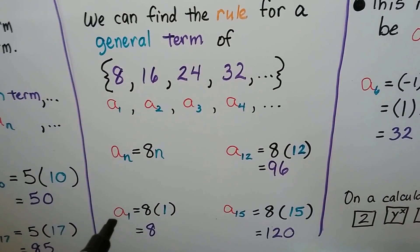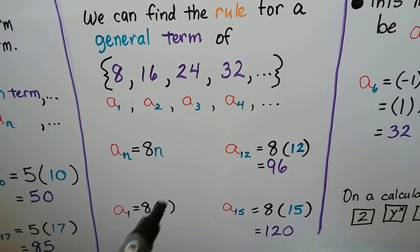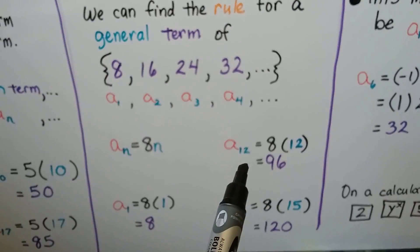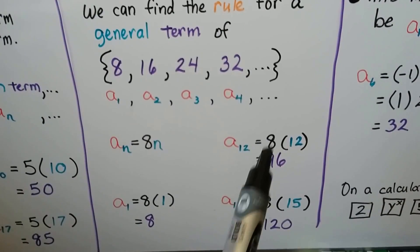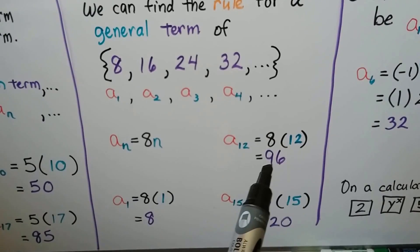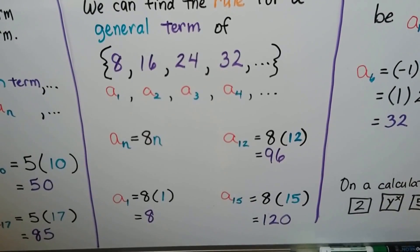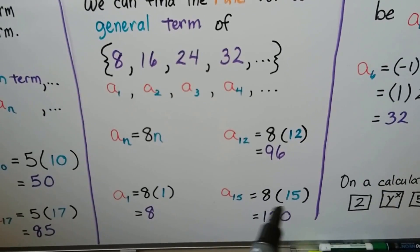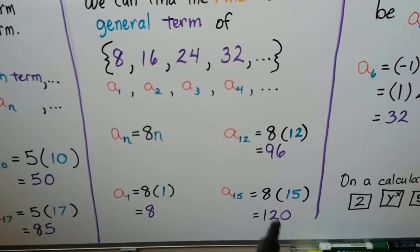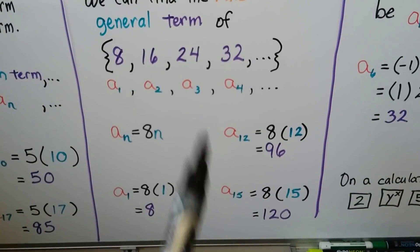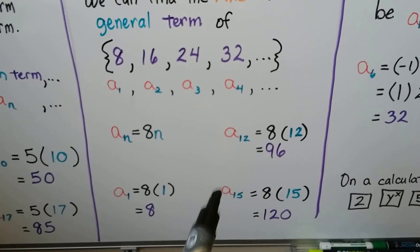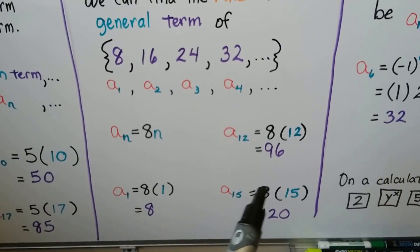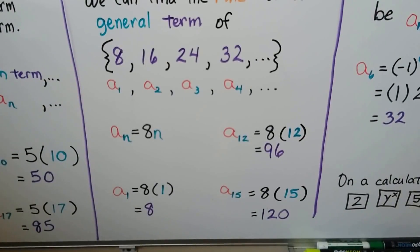So the first one is eight times one, that gave us the eight. We could find the twelfth term — it would just be eight times twelve, that would be ninety-six. We could find the fifteenth term — eight times fifteen is one hundred and twenty. We could find the nine hundred and ninety-ninth term in this list by just multiplying it by eight.